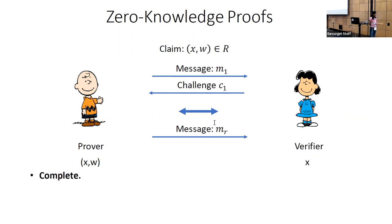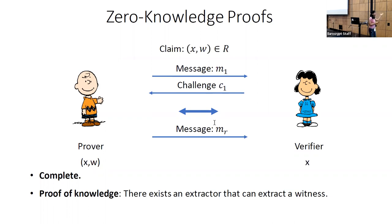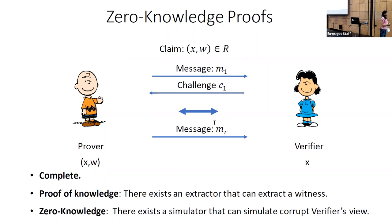In the end, we want the following properties. We want completeness, which means that if the prover is honest and knows the witness, with very high probability he should be able to convince the verifier. The protocol should be proof of knowledge, meaning there exists an extractor that can extract a witness — if the prover convinces a verifier, the prover must know the witness. Finally, we want zero knowledge, meaning a simulator can simulate a corrupt verifier's view, so the verifier could have generated the transcript herself and learns nothing extra.